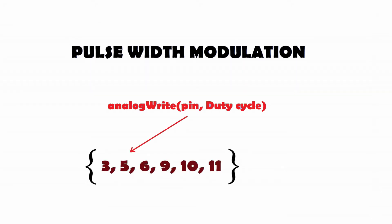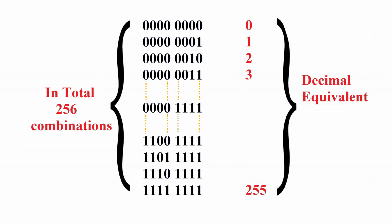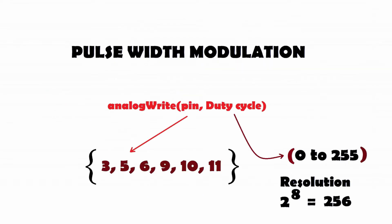In Arduino, the instruction for pulse width modulation is analogWrite, and it has two parameters: pin and duty cycle. For the pin parameter, we specify any of the PWM-capable pins. For the duty cycle, we mention a value in the range of 0 to 255, because the resolution of analog output is 8-bit — meaning 2 to the power of 8 gives 256 combinations. We write the decimal equivalent of the 8-bit code in our instruction to get the desired analog output.